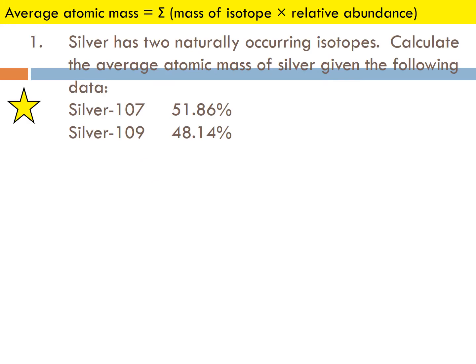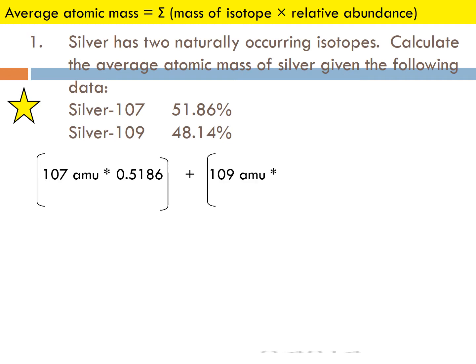Try silver. We have silver-107 and silver-109. One is at about 51% and one at 48%. Make sure you turn those into decimals. So 107 times 0.5186, added to 109 times 0.4814. Add them up and you get 108 AMUs.